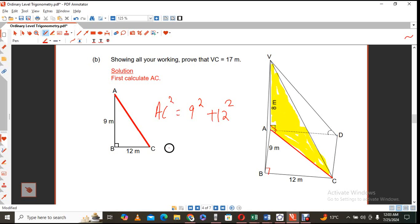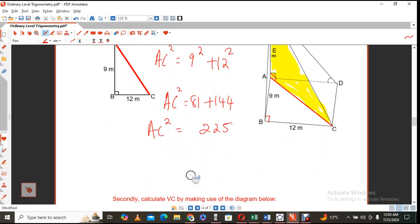Of course, AC square is equal to 81 plus 144. And then AC square is equal to, well, that's 225. So that gives me that AC will be the square root of 225. And that implies that AC is equal to 15 meters. So now that we know that this distance here is 15 meters, now I have a complete right angle triangle.